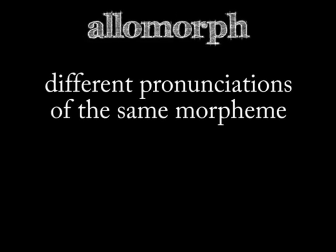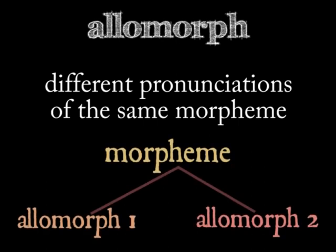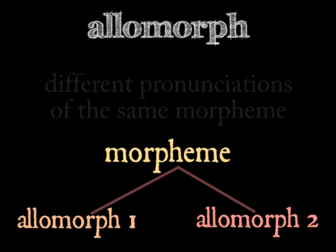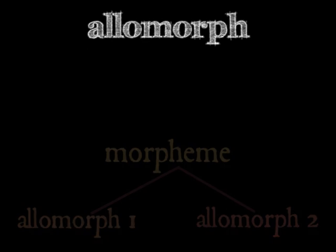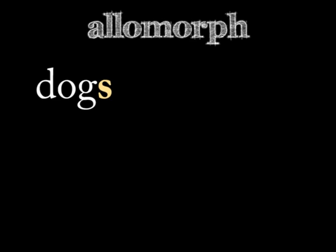A second concept to get you started is an allomorph. An allomorph is a different way that the same morpheme can show up. We talk about morphemes as being a general underlying concept. I gave you the example of 'dog' with 's', and that 's' is a plural morpheme.